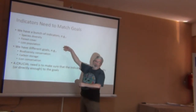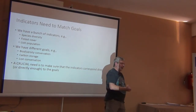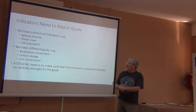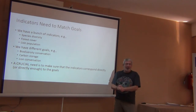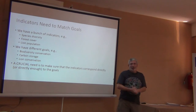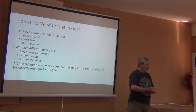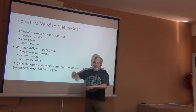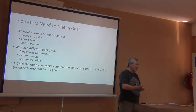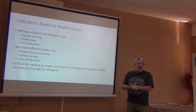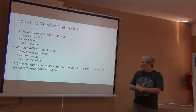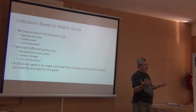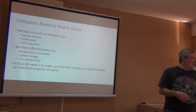For example, we might have indicators that are very easy and commonly obtained: species diversity, forest cover, or population of lions or whatever big charismatic species. But we may have very different goals — conserving all of biodiversity, just lions, or carbon storage. It's really important to make sure you're using the right indicators to achieve your goals.